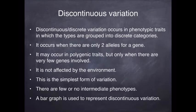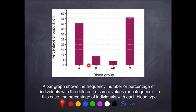Discontinuous variation is where you have discrete units or discrete categories. It can occur in polygenic traits, but if it does, you will only have two or maybe three genes involved, each with a maximum of two alleles. It is not affected by the environment in any way — this is the simplest form of variation, though not the most common. The most common form is actually continuous. When you draw discontinuous variation, you always draw it as a bar graph. For blood groups, you are either A, B, AB, or O — there's no variation in between; these are discrete units.